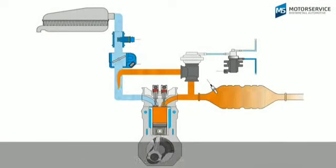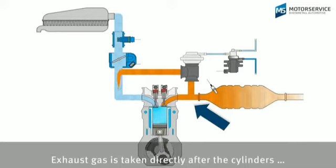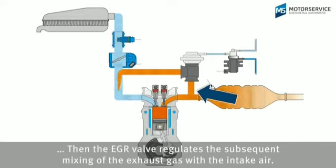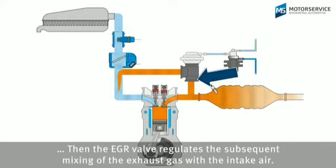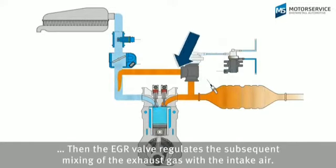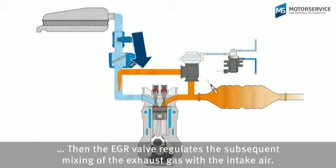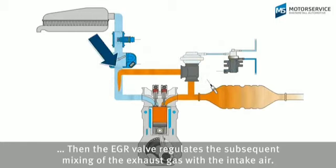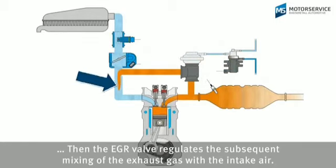Here we can see the basic structure. Exhaust gas is taken directly after the cylinder, and the EGR valve regulates the mixing of the exhaust gas with the intake air, which again enters into the combustion chamber.